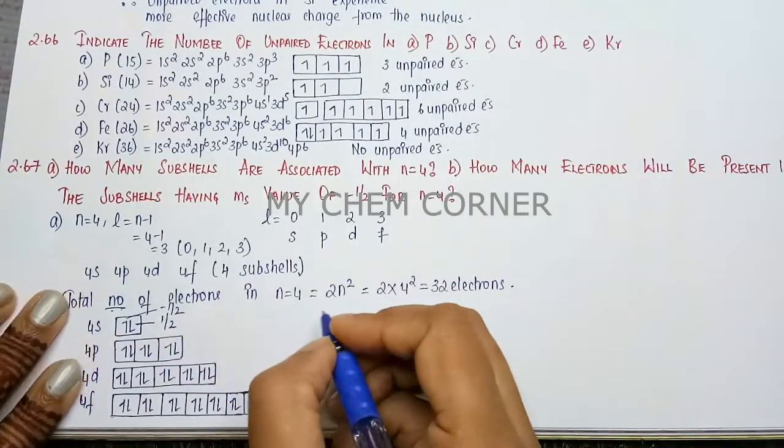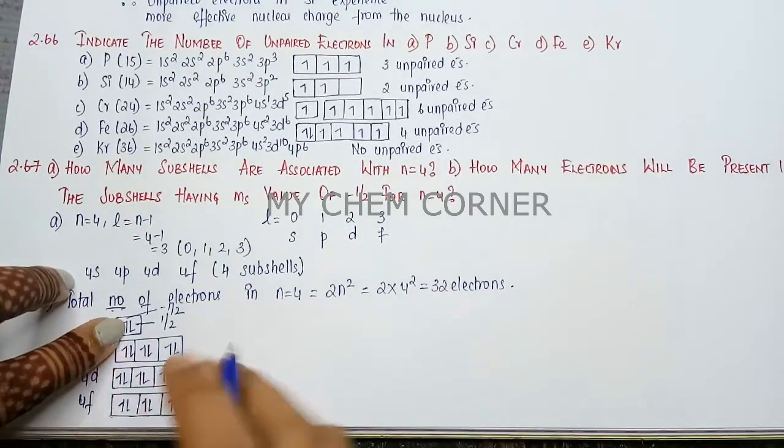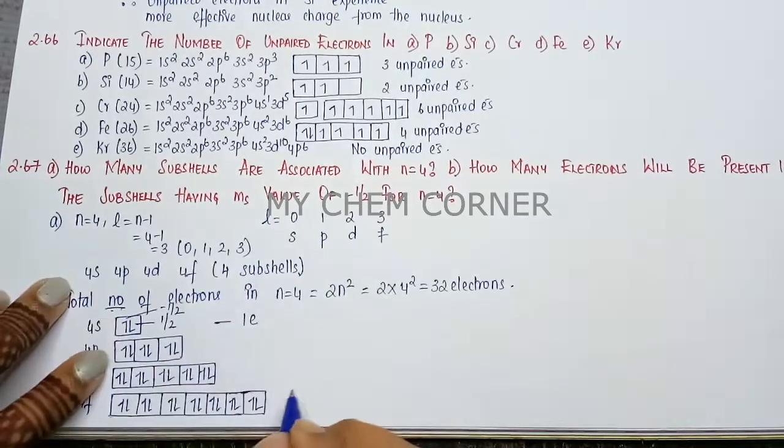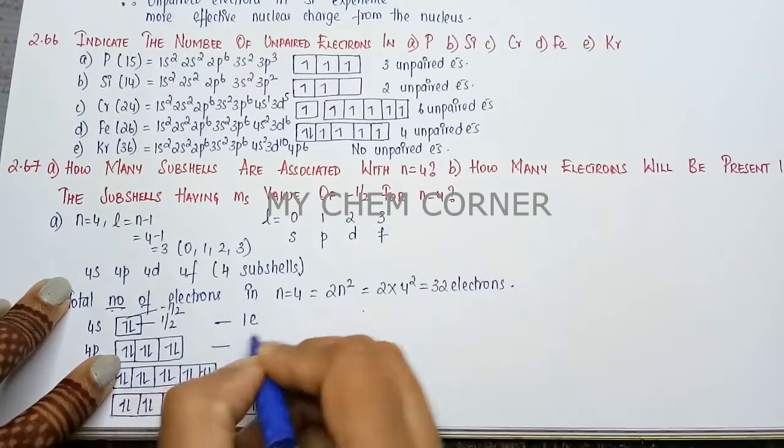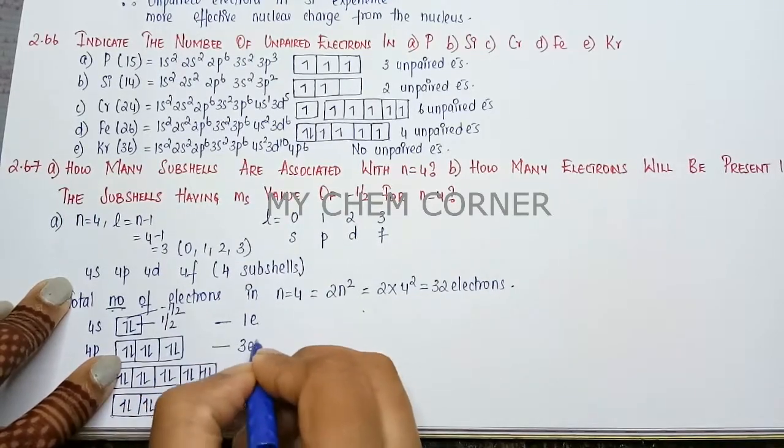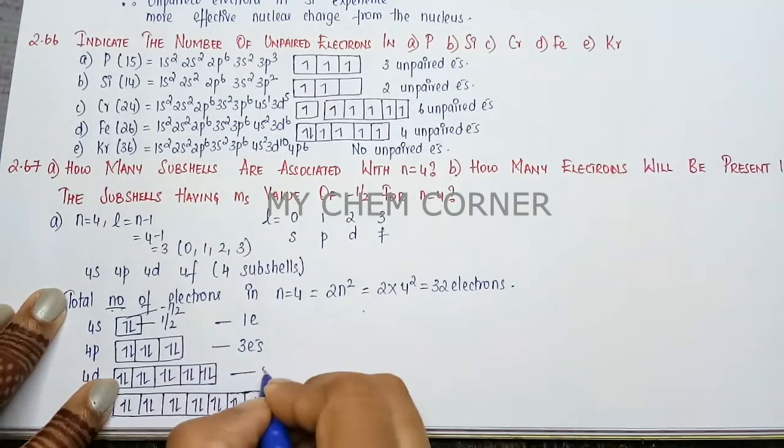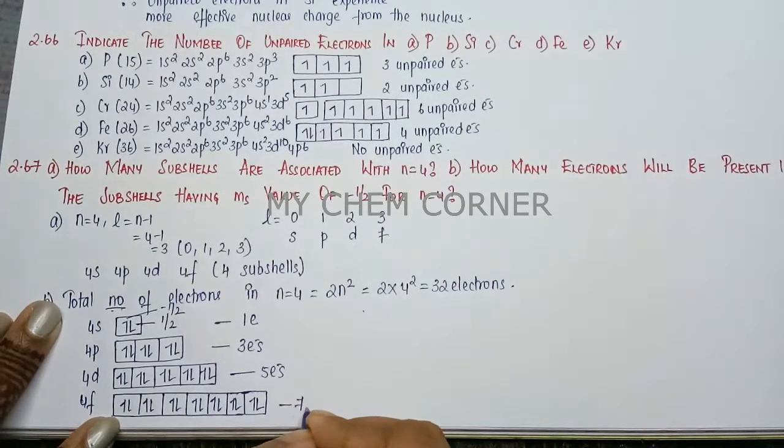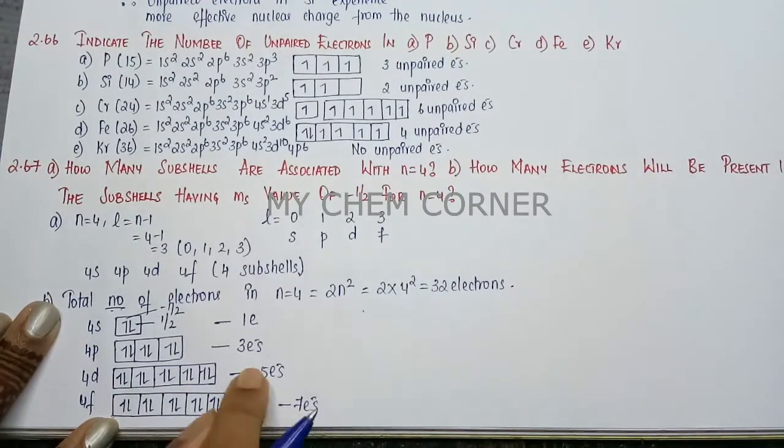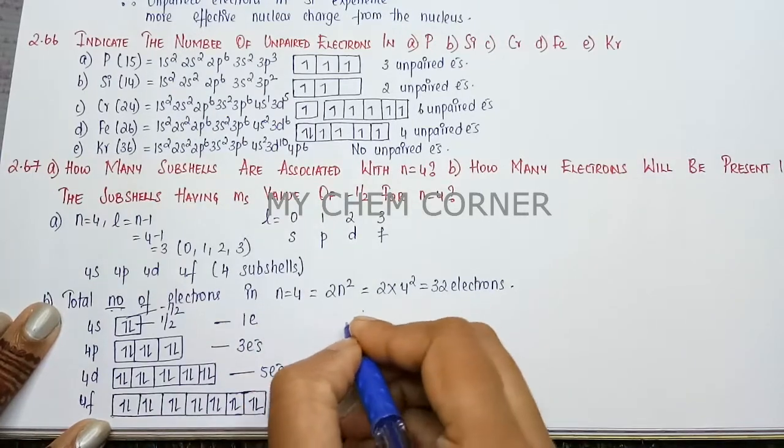So here we can write a sentence. Before we write that sentence, since we have 1 minus half over here, I will put 1 electron. Here there are 6 electrons out of which 3 will be plus half, 3 will be minus half. So we need to see for minus half, so 3 electrons. Here 10 electrons out of which 5 is minus half and 5 plus half, so 5 electrons. 14 are there, 7 will be plus half, 7 minus half. So here when we calculate this also, you will get correctly. 7 plus 5 plus 3 plus 1 is equal to 16 electrons.